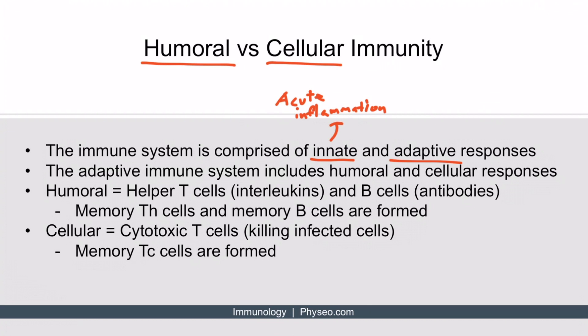On the other hand, much of chronic inflammation is mediated by the adaptive arm of the immune system. When discussing humoral and cellular immunity, it's best to think specifically of adaptive immunity. The adaptive immune system includes both humoral and cellular responses.